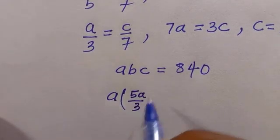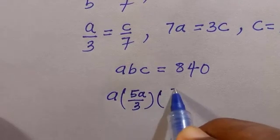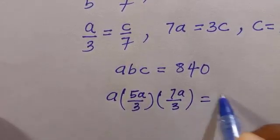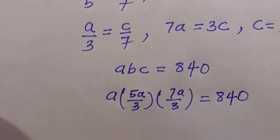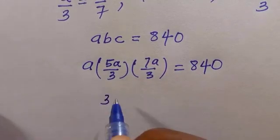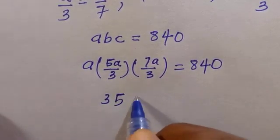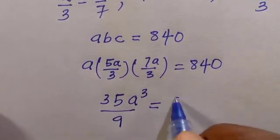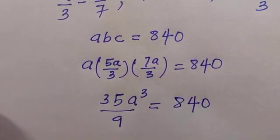And when we multiply all the numerators together we're going to have 35a raised to power 3 divided by 9 equals 840.